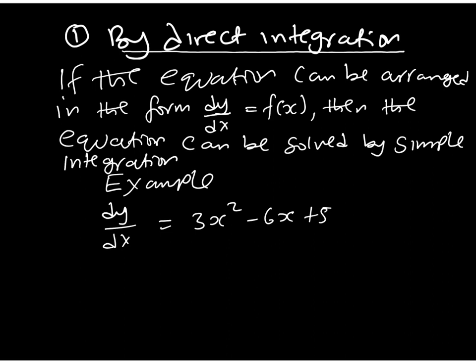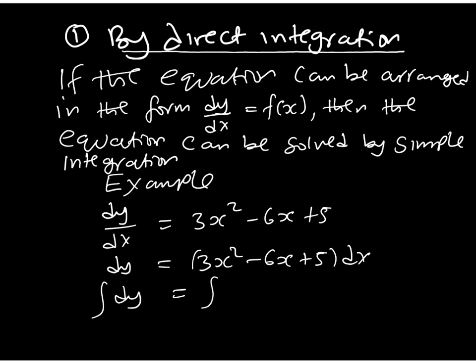Look at that equation — on the left hand side we have dy/dx, the differential coefficient, and on the right hand side we have a purely a function of x. This becomes a straightforward equation to solve. We treat dy the same as 3x² minus 6x plus 5 times dx, so applying integrals: the integral of dy equals the integral of 3x² minus 6x plus 5 dx. This is an indefinite integral, so you must always include a constant of integration.